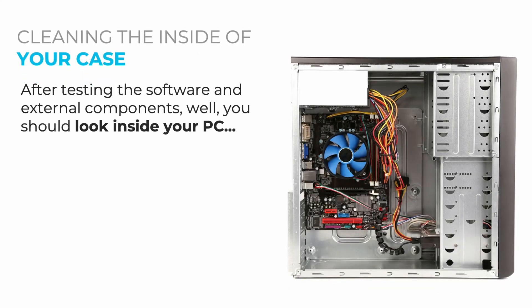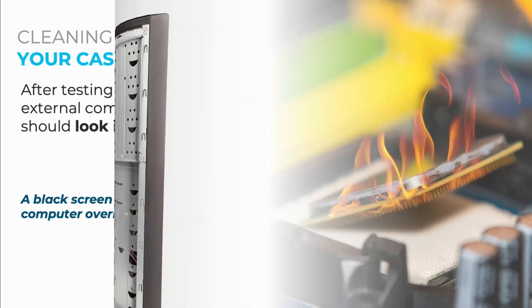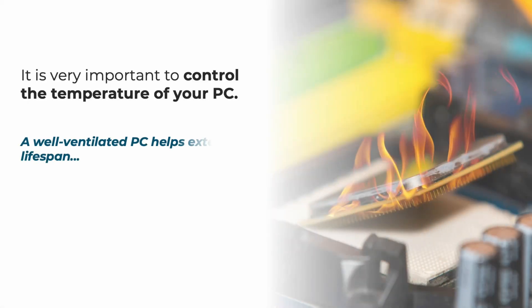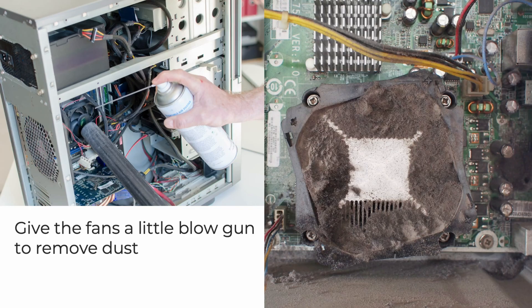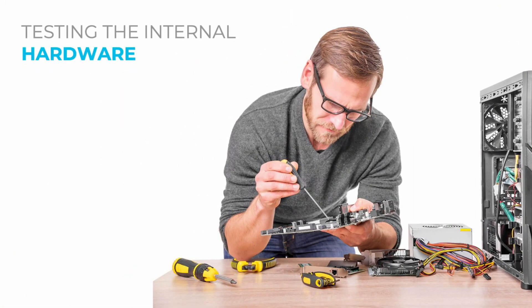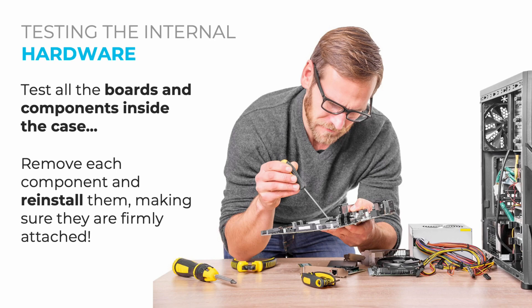After testing software and external components, look inside your PC. A black screen can be caused by overheating, so it's important to control your PC's temperature — a well-ventilated PC helps extend its lifespan. Turn it off, unplug the power source, open the case, and blow the fans to remove accumulated dust. If the problem persists, remove and reinstall each internal component, making sure they are all firmly attached.